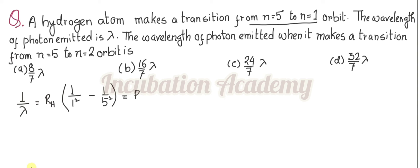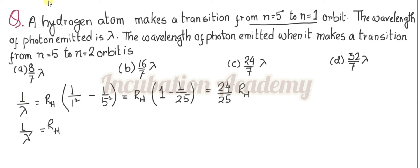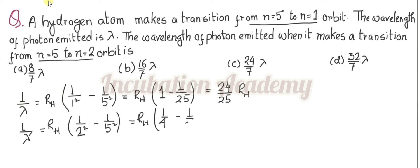Calculating: 1 over lambda equals R_H times (1 minus 1 over 25), which gives 24 over 25 times R_H. Now for 1 over lambda-prime, the transition is from n equal to 5 to n equal to 2, so it is R_H times (1 over 2 squared minus 1 over 5 squared), which is R_H times (1 over 4 minus 1 over 25). The common denominator is 100.